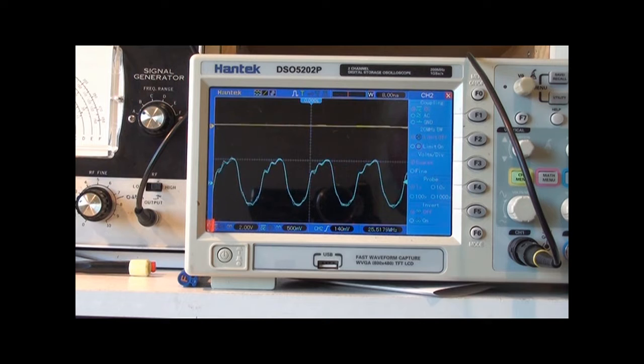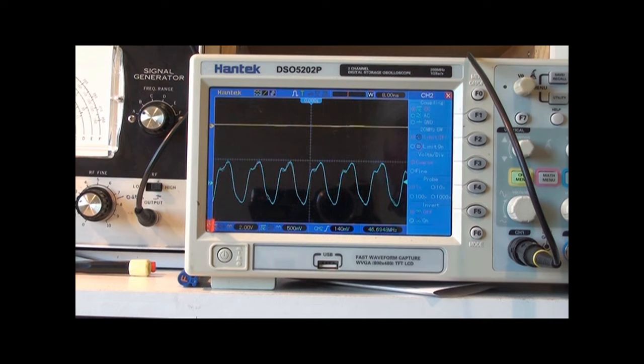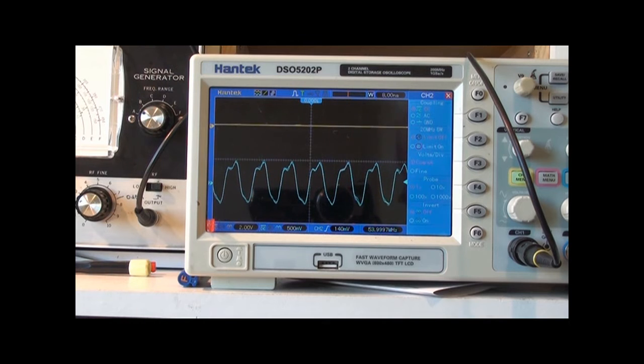As we get higher in frequency you'll see the waveform starting to round off due to the frequency response of the buffer amplifiers following the SI5351. The SI5351 puts out a reasonably good square wave. Well past 54 megs. There's 54 megs.